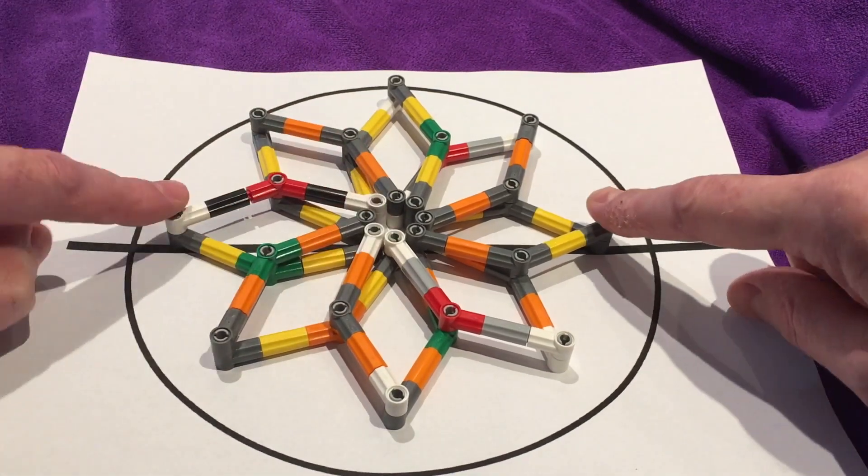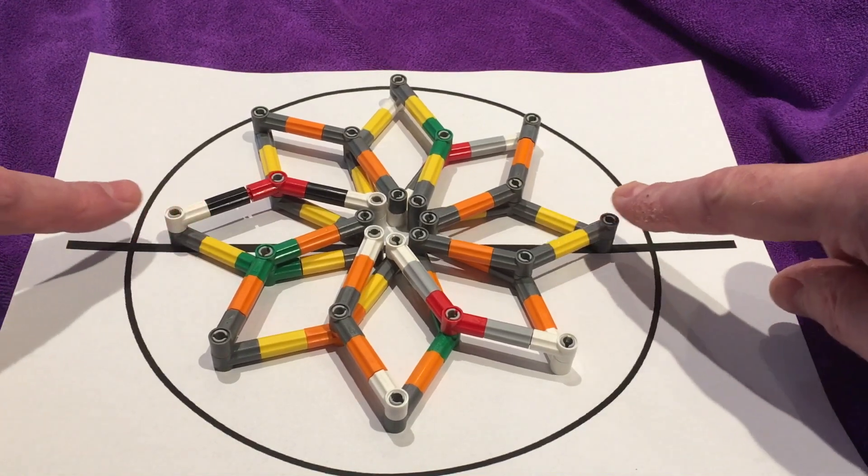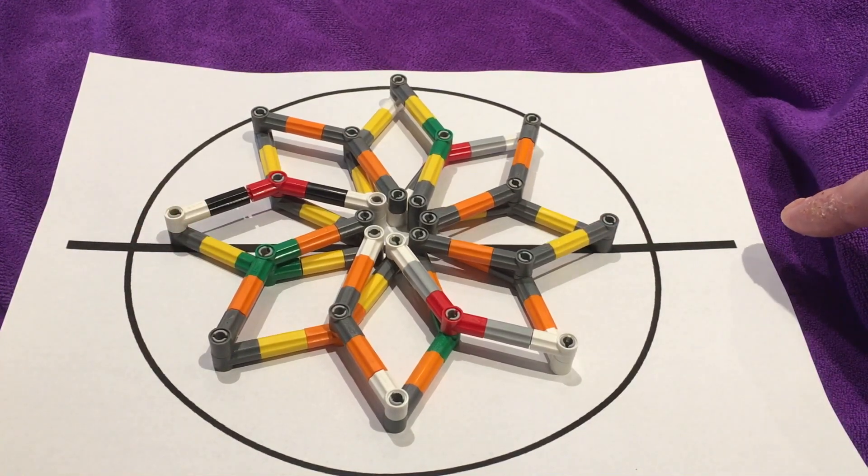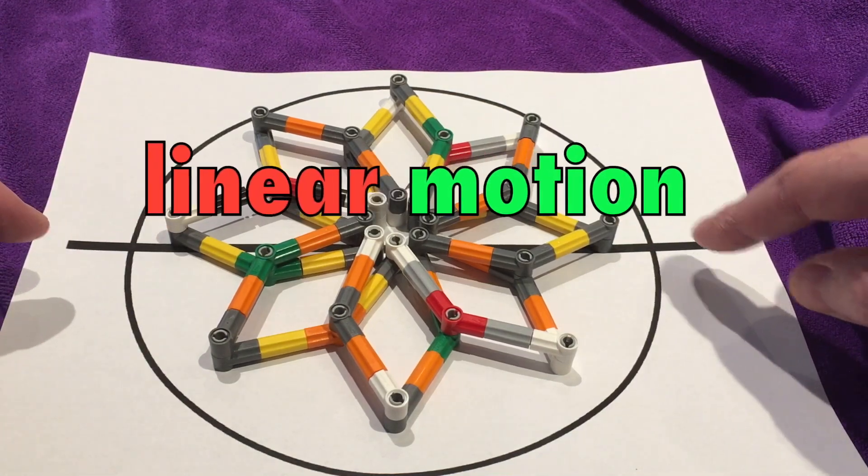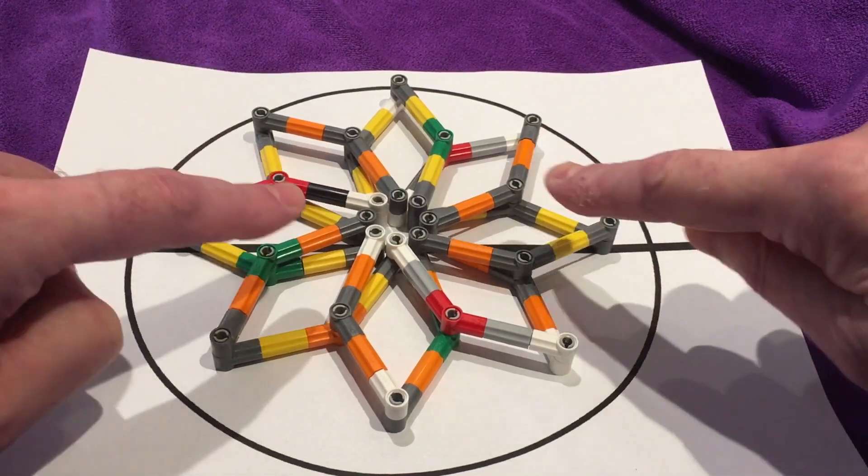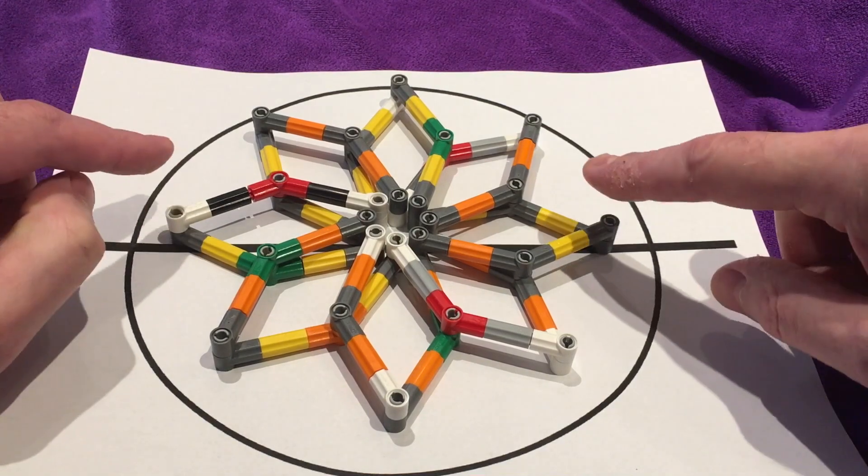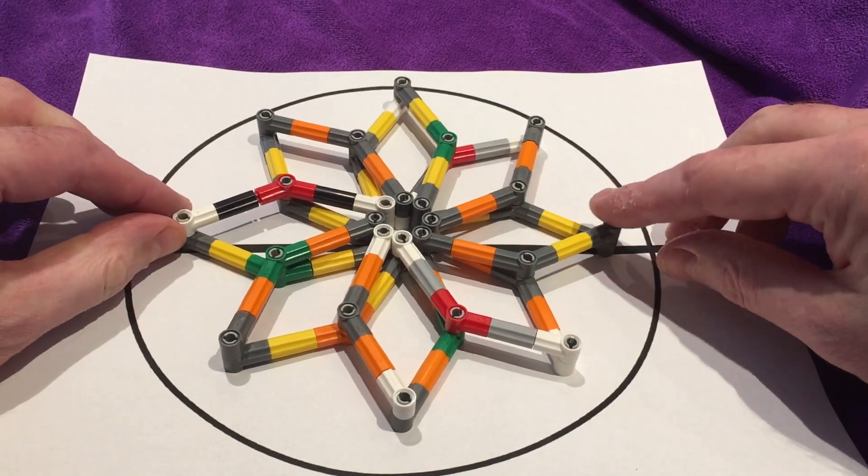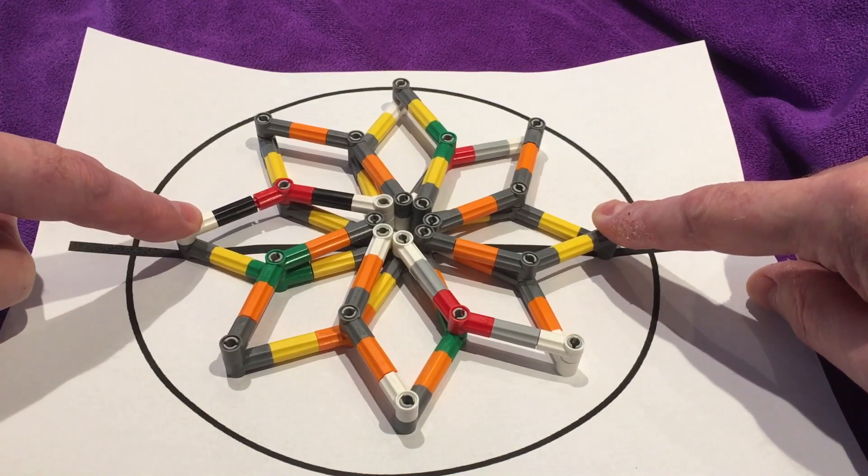Now the center of our Hoberman circle is at the center of our circle here. Now if I take my hands and I move this circle out this way along that line or back in this way along that line, I'm using linear motion. I'm moving these points of our Hoberman circle out along a line or in along a line. And the thing about a Hoberman sphere is it will change shape as I move my fingers along this line. Now watch what happens.